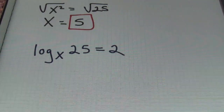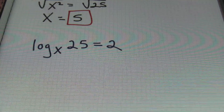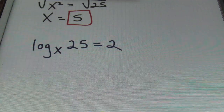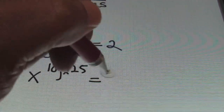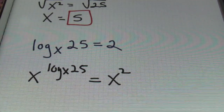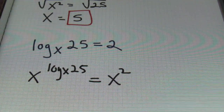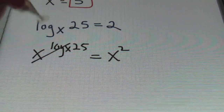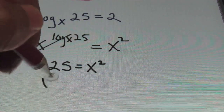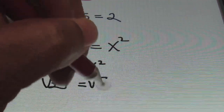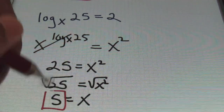Another way to solve problem number two is to exponentialize the equation — taking the base and making both sides of my equation exponents. I'll have x to the log base x of 25 equals x to the second power. This x and log x cancel out, leaving me with 25 equals x squared. Taking the square root of both sides, the square root of 25 is 5 and the square root of x squared is x. So once again x equals 5.